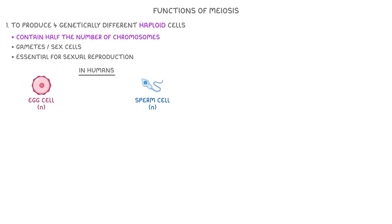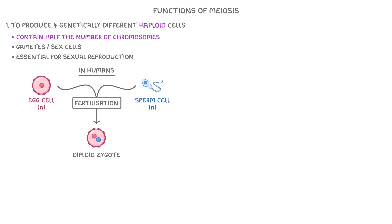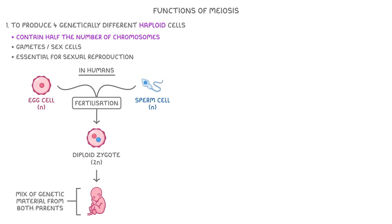Let's take a quick look at why this function of producing gametes is so important. When these gametes fuse during fertilization, they form a diploid zygote, which contains the full number of chromosomes, and we show this with a 2n. The zygote can then develop into a new organism, carrying a mix of genetic material from both parents.